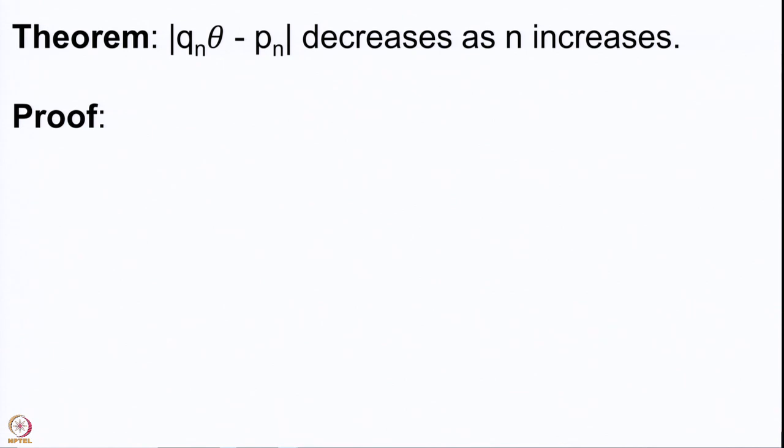So the real number θ can be expressed in terms of the complete quotient θₙ₊₁ using Pₙ, Pₙ₋₁, Qₙ, and Qₙ₋₁. This is something we will need when we prove the next result: that |Qₙ θ − Pₙ| decreases as n increases. This is the result we now want to prove — it is one of the stepping stones toward showing that convergents give the best possible approximations.